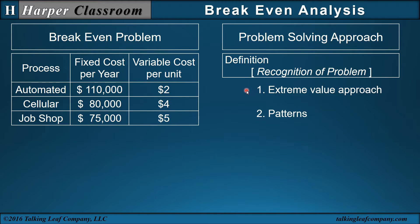Let's look at the extreme value approach. An extreme value on the low side of production would be zero. I'd never produce it, but what if I did? Then my variable cost would go to zero, and then my fixed cost would be 110, 80, and 75, so job shop would have the lowest cost. The principle is for very low production amounts, job shop will have a lower cost than the other two. The other extreme value is a very high production, let's say one million units. If my unit variable cost is two, four, and five, then my automated will be two million dollars, 110,000, 4,080, and 5,075, then the lowest cost would be automated. So for very high production amounts, automated would have a lower cost than the other two.